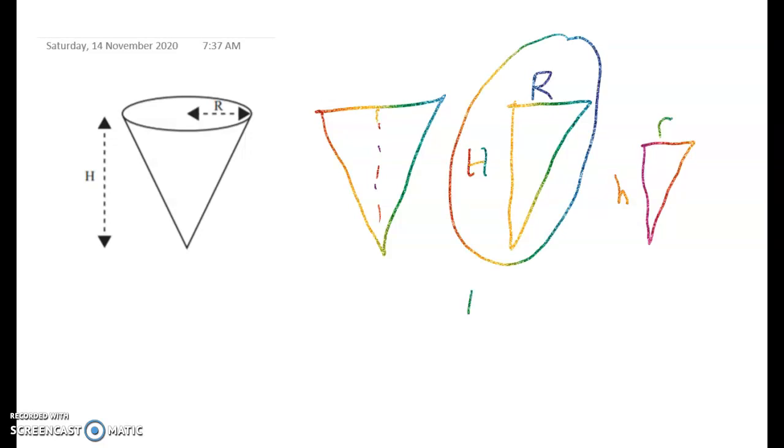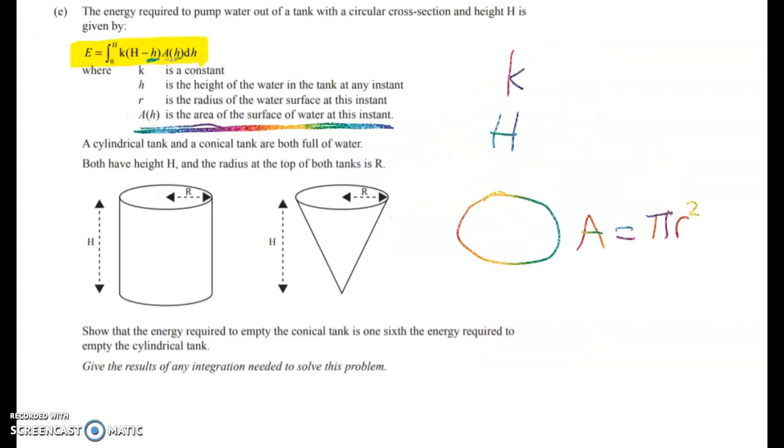So using similar triangles from year 10 we can get this relationship. And if you've watched lots of these videos on excellence questions you know that similar triangles comes up all the time. What we're trying to do here is to get down to one variable because going back to the formula we can see that we need A as a function of h because we're integrating with respect to h.